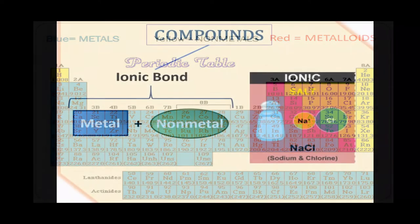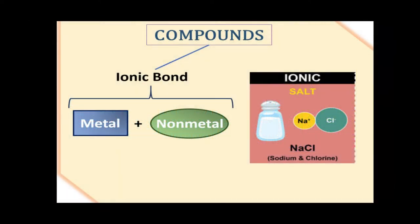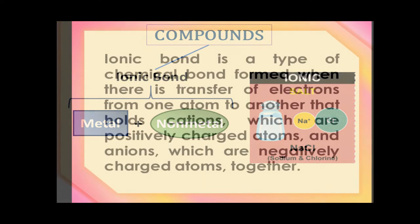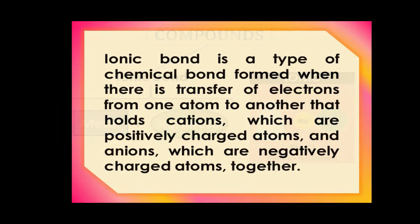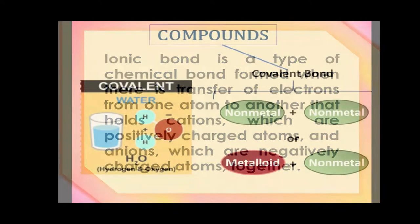Ionic compounds are formed between a metal and a non-metal. The chemical combination between the two elements results in the formation of ionic bonds between the atoms.